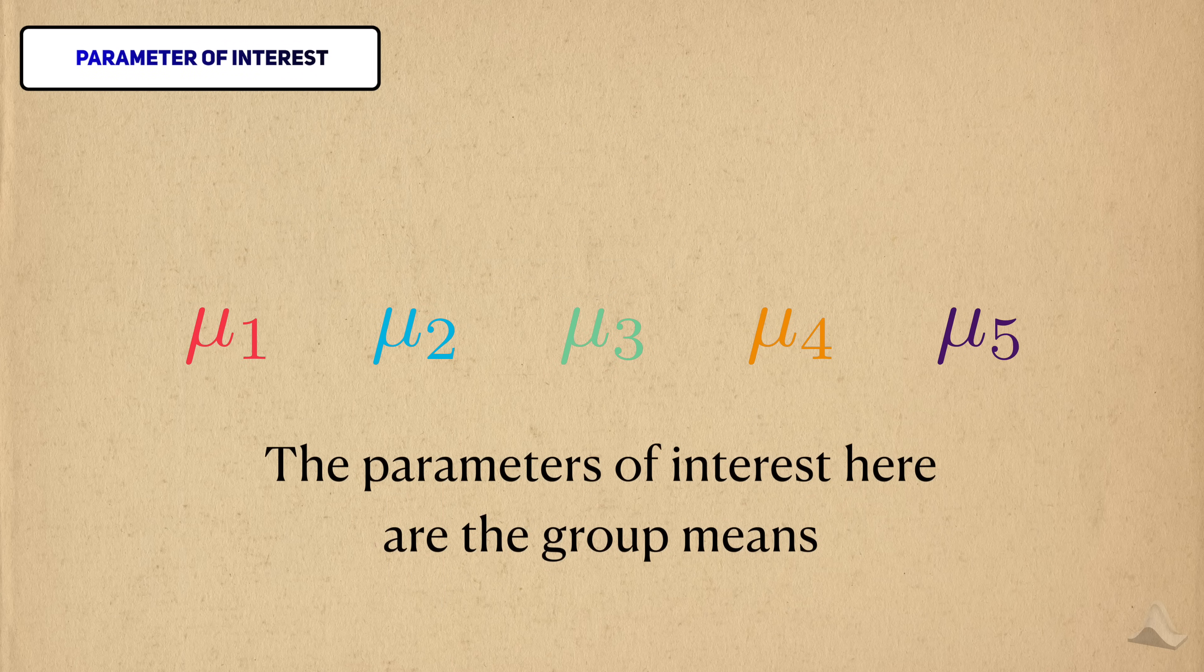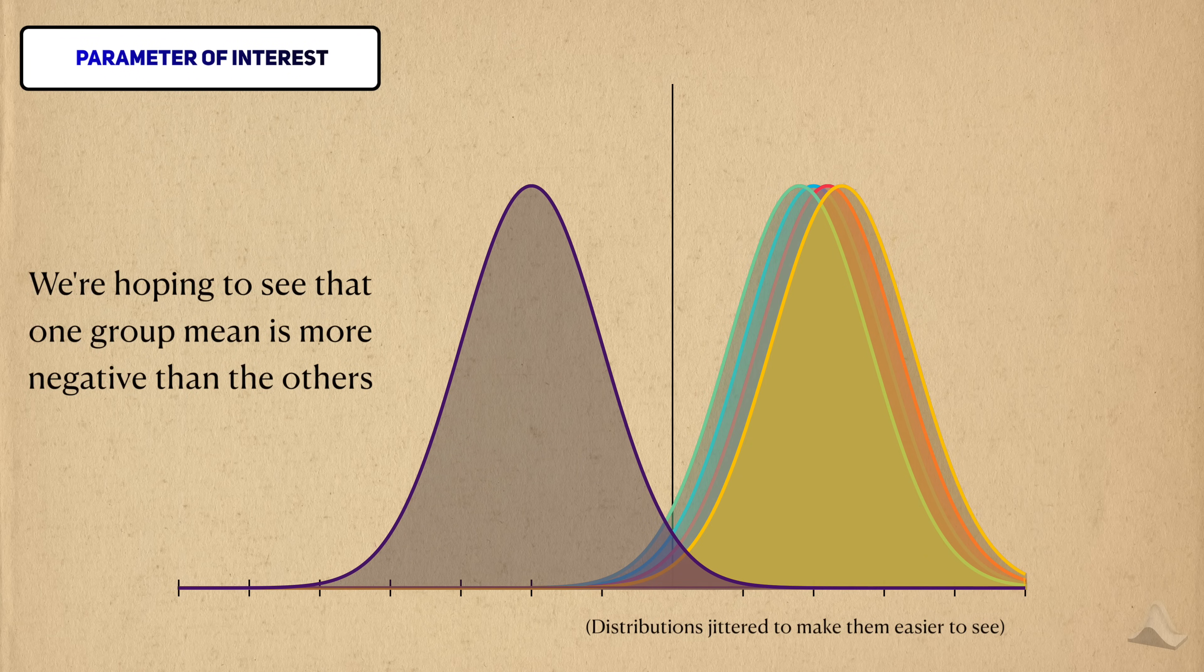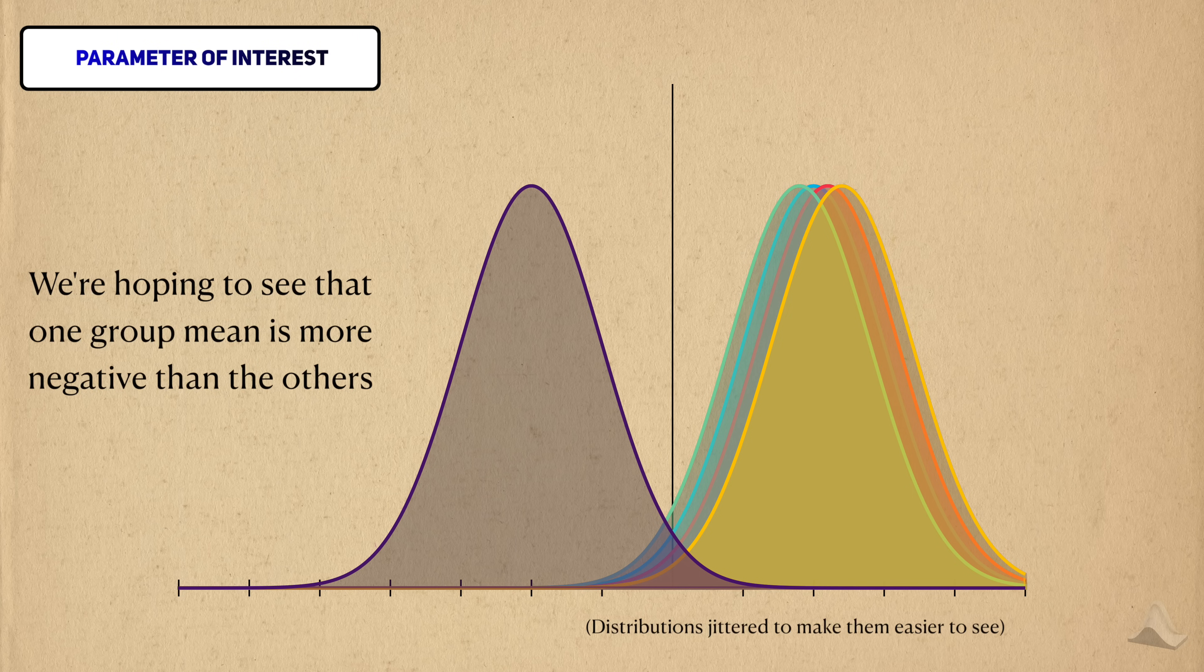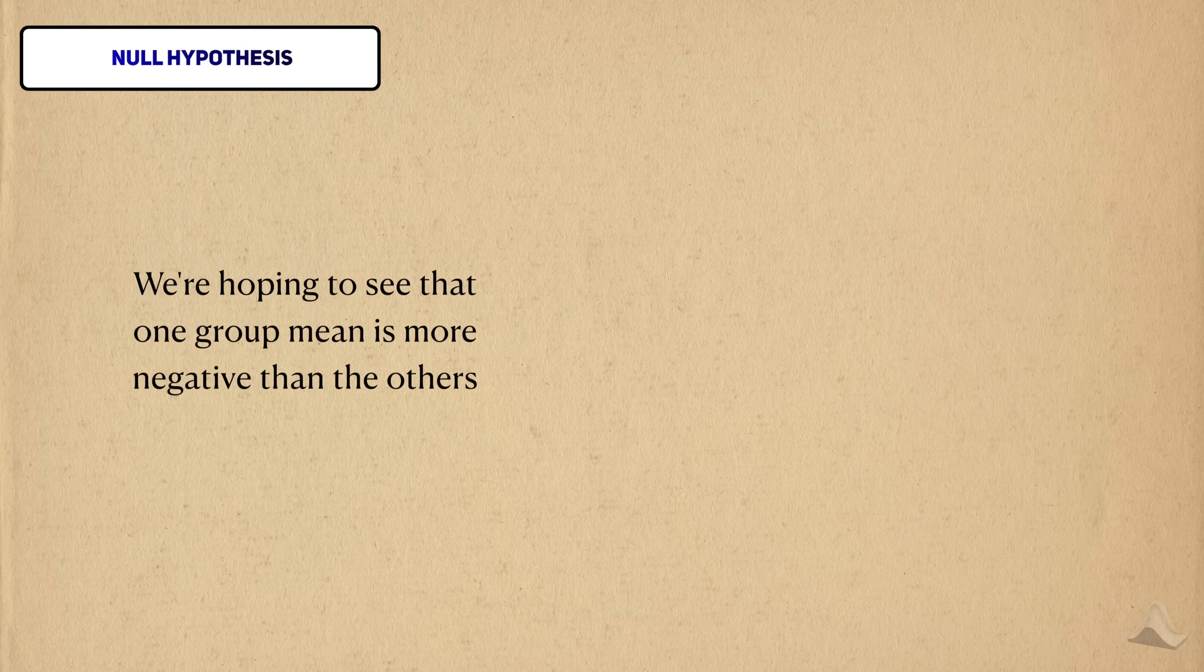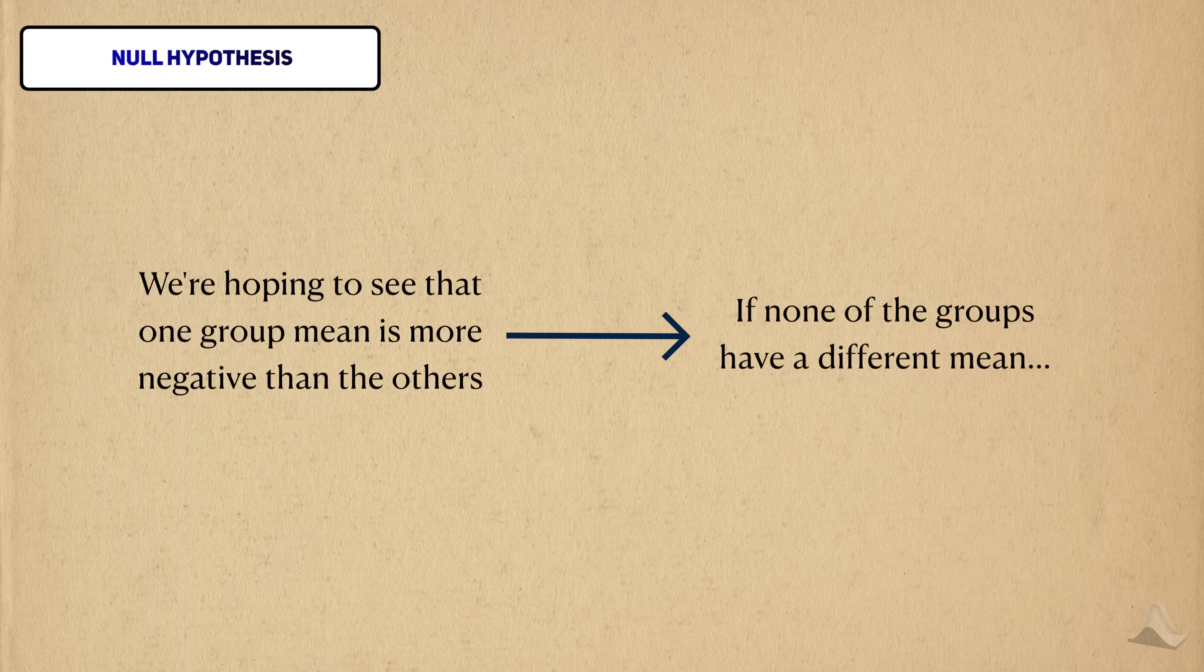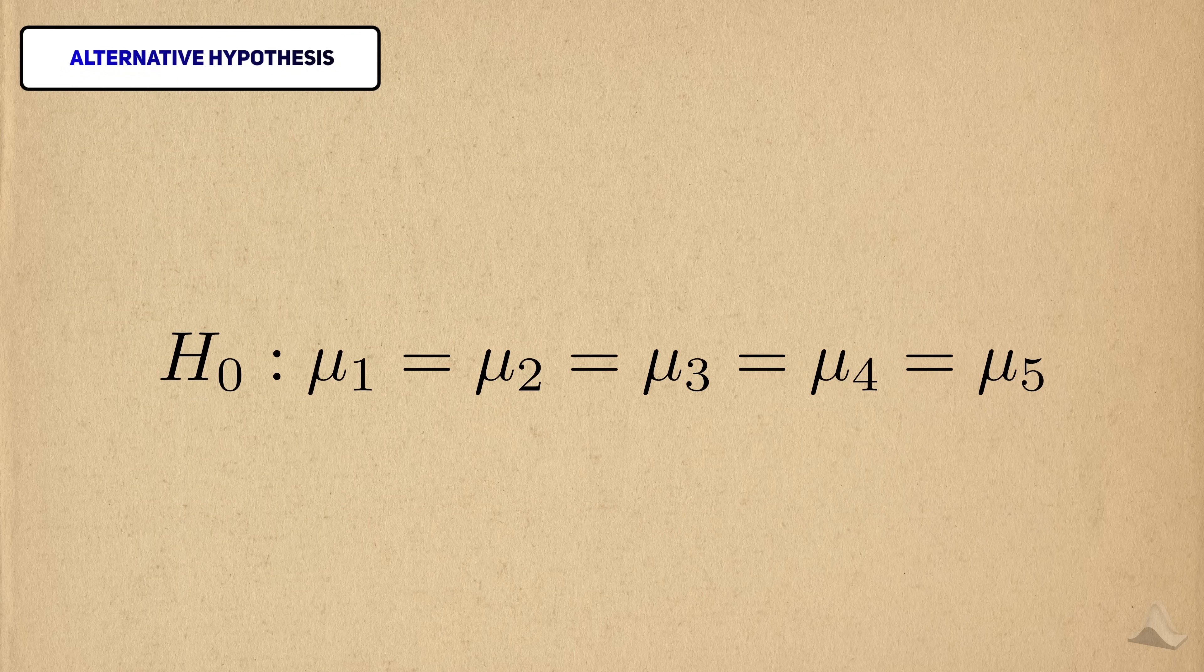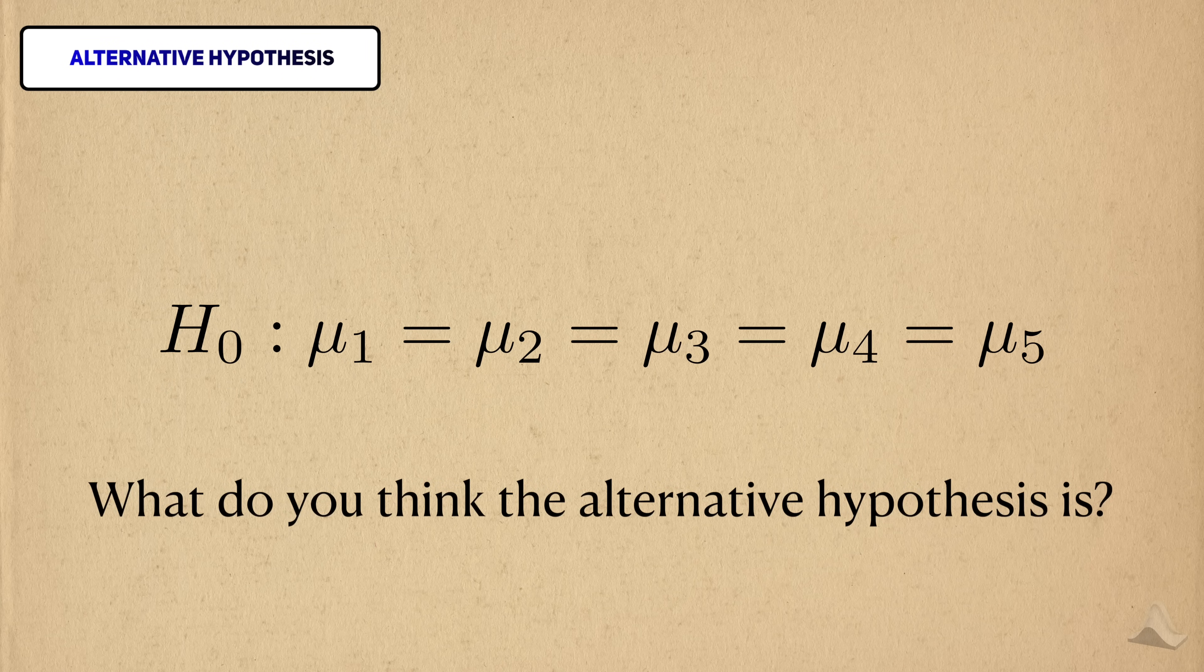The parameters of interest here are the group means. Since these distributions represent change in tumor size, we're hoping to see that one of these groups has a significant negative group mean. To create a null hypothesis, we have to think about it in opposite terms. If none of these groups have a different mean than the others, then they all must also have the same mean. So this forms our null hypothesis. If this is the null hypothesis, then what do you think the alternative hypothesis is?